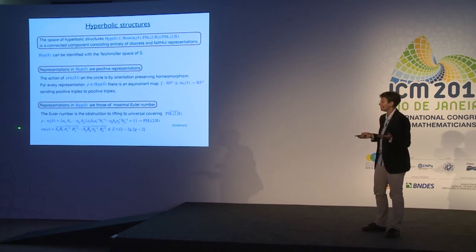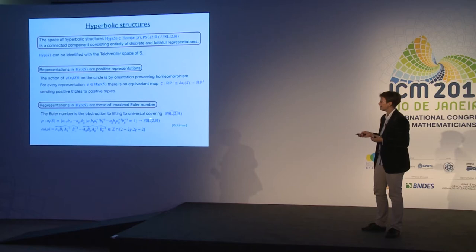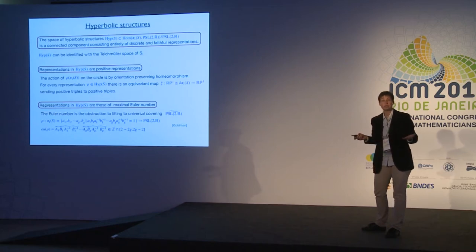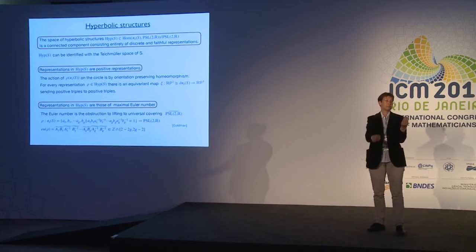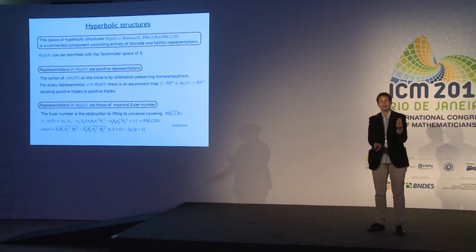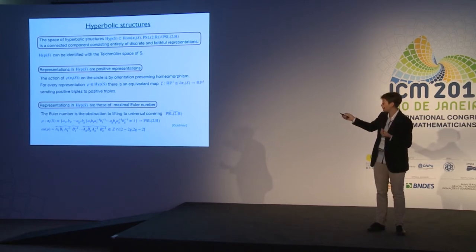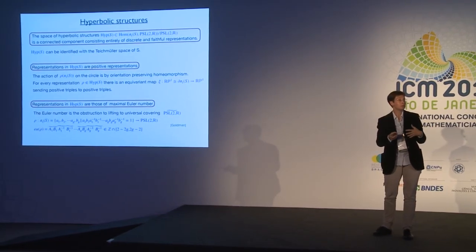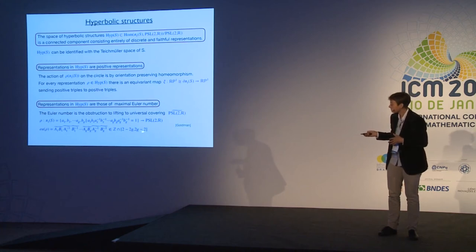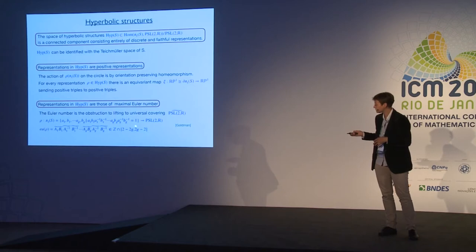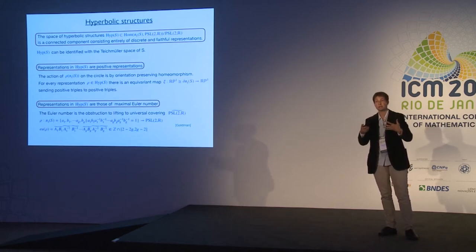By a Milnor–Wood inequality, this integer lies in the interval [2−2g, 2g−2] where g is the genus. Goldman showed that representations of maximal Euler number 2g−2 actually come from a hyperbolic structure. So now I want to tell you what higher Teichmüller spaces are. Once we have this description of Teichmüller space as a subset of the representation variety, we can ask what happens if we replace PSL(2,ℝ) by a Lie group of higher rank — where the maximal abelian subgroup diagonalizable over ℝ is not just one-dimensional but of dimension 2 or higher.